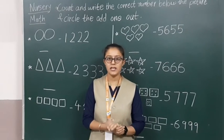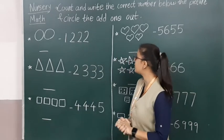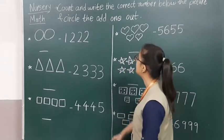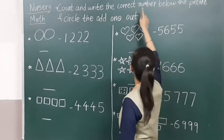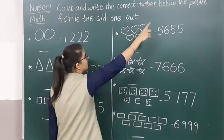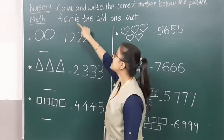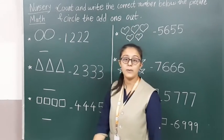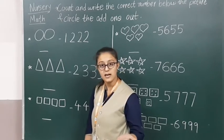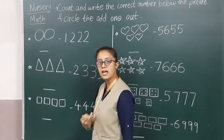I hope you all have enjoyed doing the oral part of 1 to 20 and days of the week. Now on the screenboard we have drawn some pictures and also written some numbers. The activity heading is: Count and write the correct number below the picture, and circle the odd one out. What we have to do is count the pictures, then write the number below, and then find and circle the odd one out.